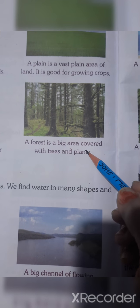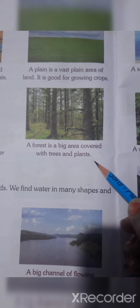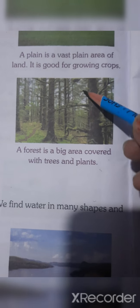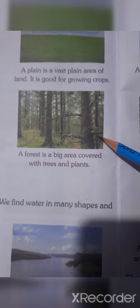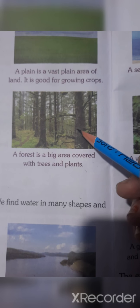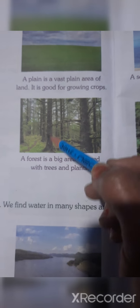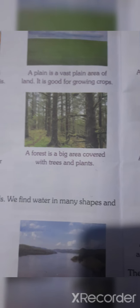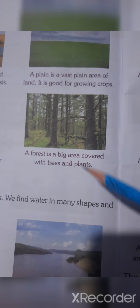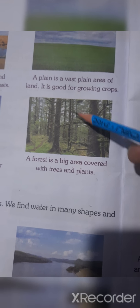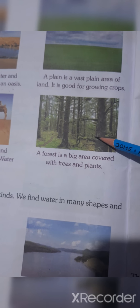Now look at this picture. A forest is a big area covered with trees and plants. These kinds of tall trees we can see in a forest. When we go to Shimla, there we can see these kinds of long, tall trees — those areas are covered and it is a forest area.